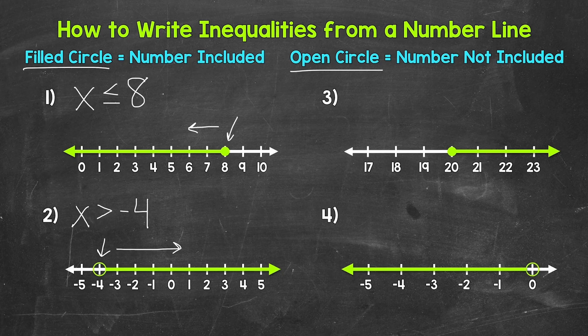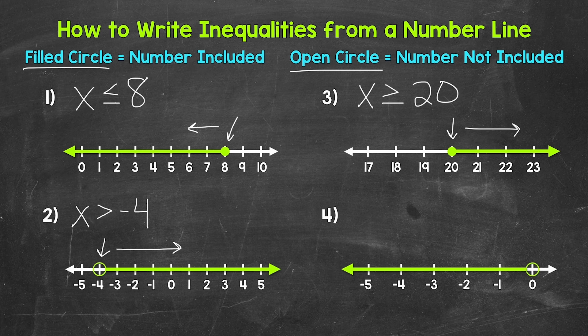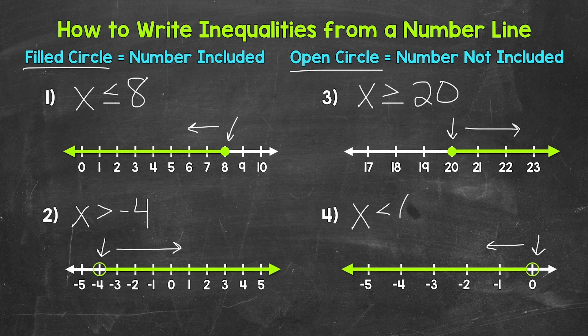Let's move on to number three, where we have a filled circle at 20, and then an arrow pointing right. So we have all of the numbers greater than 20, and 20 is included — it is a solution — we have that filled circle there. So x is greater than or equal to 20. And then lastly, number four: we have an open circle at zero, so zero is not a solution — it's not included. And then the arrow goes left, pointing towards all of the numbers less than zero. So x is less than zero.